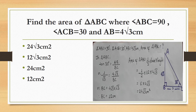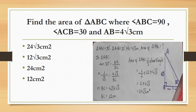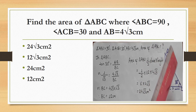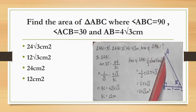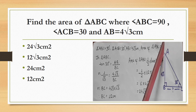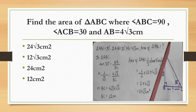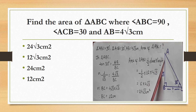Find the area of triangle ABC if angle ABC = 90 degrees, angle ACB = 30 degrees, and AB = 4√3 cm.